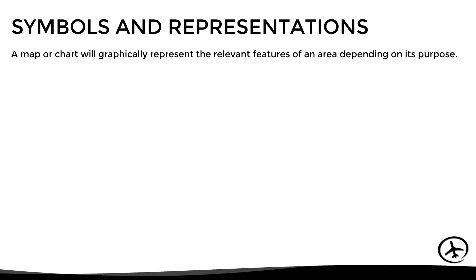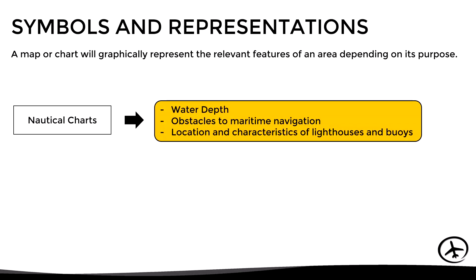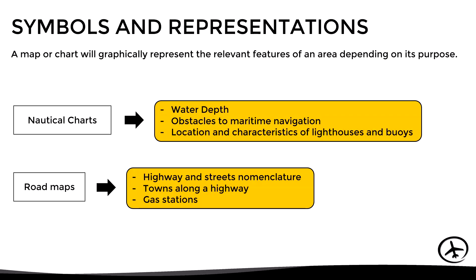As we said in the previous video, a map or chart will graphically represent the relevant features of an area depending on its purpose. For example, nautical charts will focus on aspects relevant to maritime navigation such as water depth, obstacles, location and characteristics of lighthouses and buoys, while a road map will focus on aspects relevant for drivers such as highway and street nomenclature, towns, gas stations, etc.